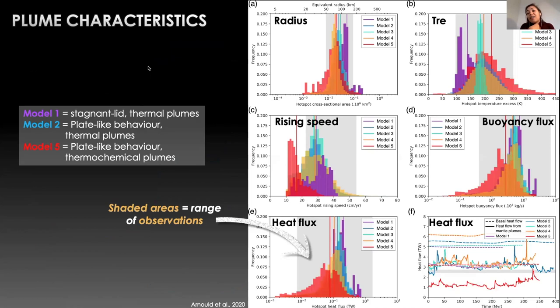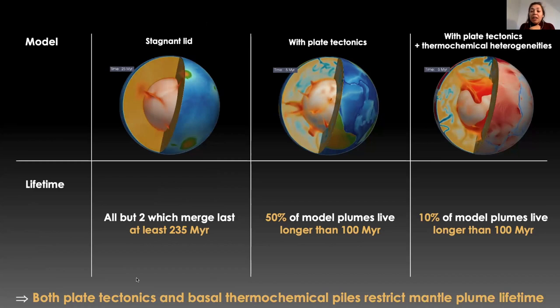We first made sure that all the models featured mantle plumes with earth-like characteristics by comparing the radius of the plumes, their temperature excess, their rising speed, their buoyancy flux, and their heat flux. Here in color for the models with earth observations of plume characteristics which are in gray shaded areas on those plots.